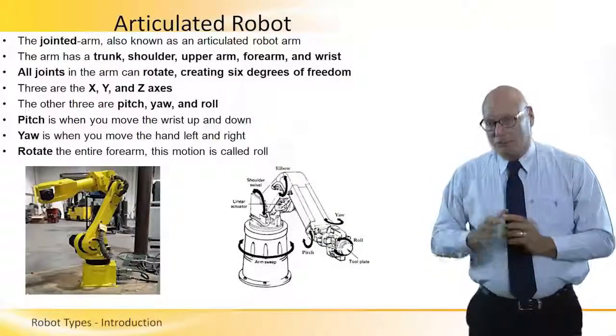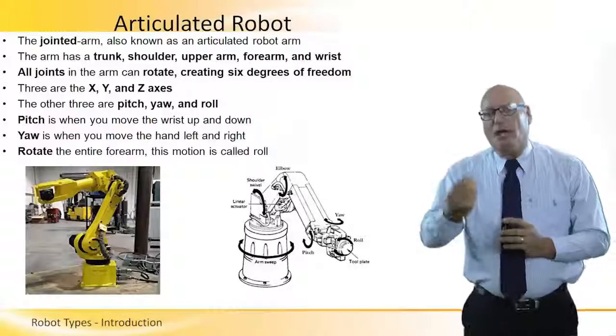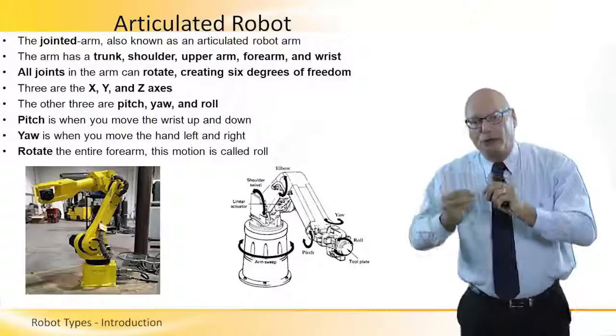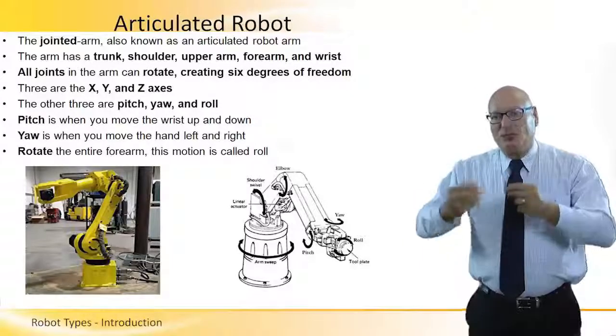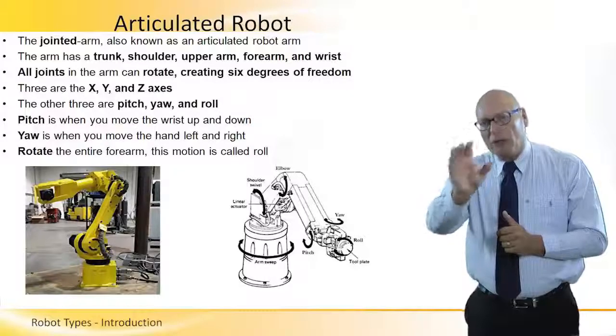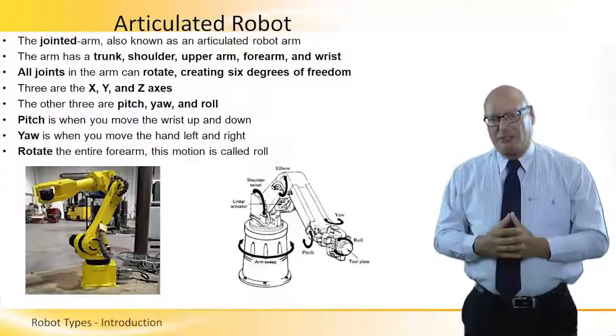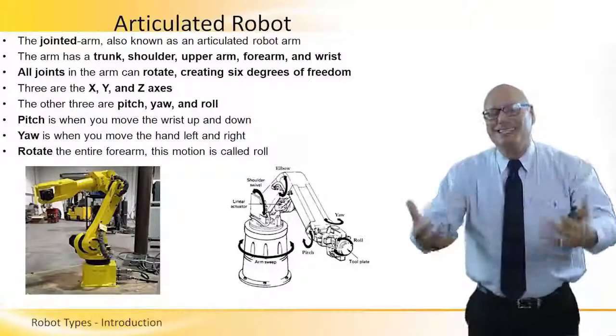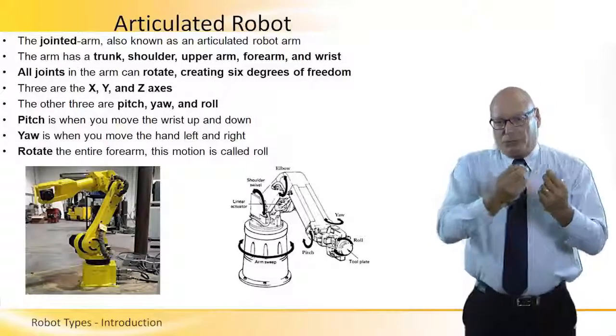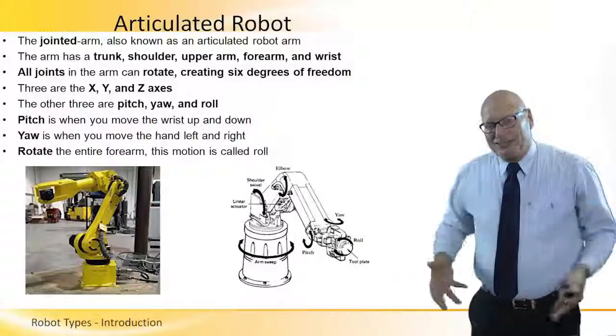Articulated robot. It's the most popular robot on earth. It's a joint arm. And it's called articulated robot arm. This arm has a trunk, shoulder, upper arm, forearm and wrist. Now this wrist itself is holding the end effector and the end effector has roll, pitch and yaw, three additional degrees of freedom. So all the joints in the arm can rotate creating six degrees of freedom. As we can see very clearly in this picture. There are three basic axes X, Y and Z reaching there, allowing the robot to reach its entire workspace.